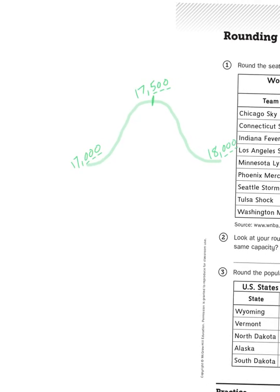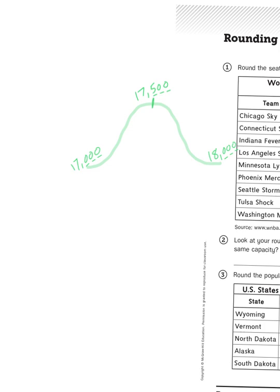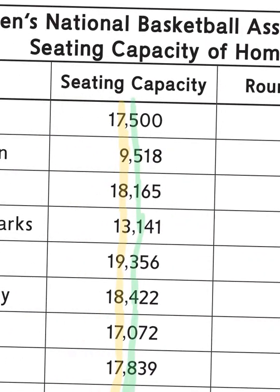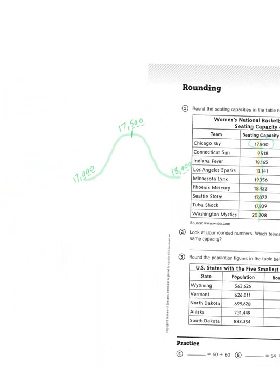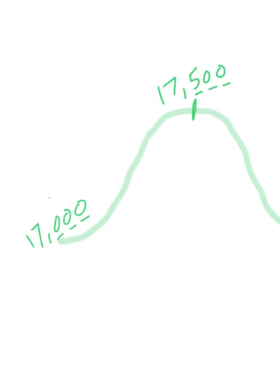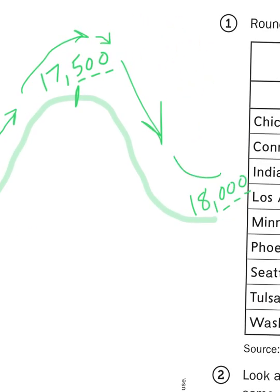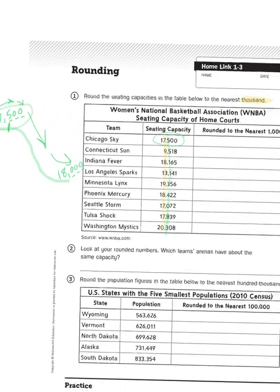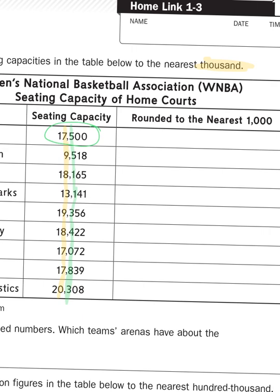When rounding to the nearest thousand, I look at the hundreds digit. Is it at or above the halfway mark, which is 500? It just so happens that 17,500 is the exact halfway number. Using the roller coaster analogy: when I get to that peak and start to tip over, gravity pulls me quickly down the other side — thrills ensue. So 17,500 is right at that tipping point, and I would round it up to 18,000.